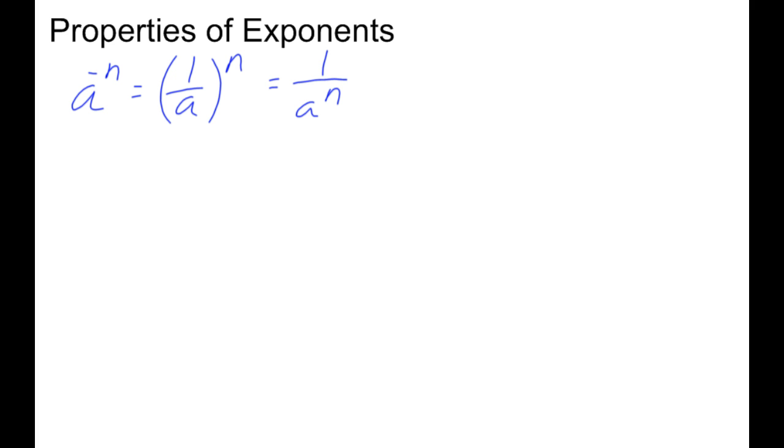Another one of the properties that you're going to be using in this lesson is a to the n times a to the m is equal to a to the n plus m. Let me explain it. So we have 3 to the 2nd power times 3 to the 4th power. That is equal to 3 to the 2 plus 4, which is 3 to the 6th. Think about it.